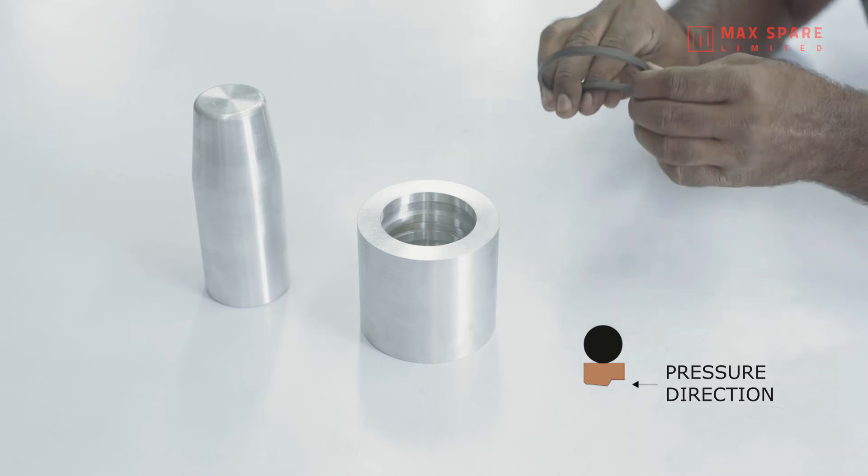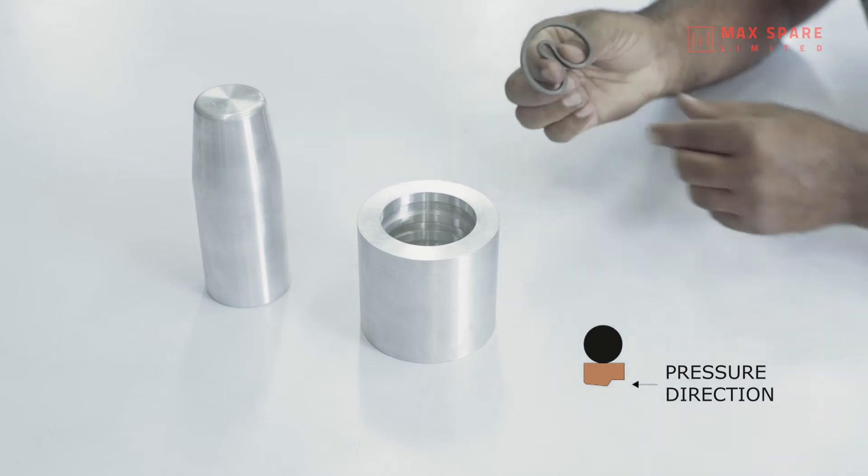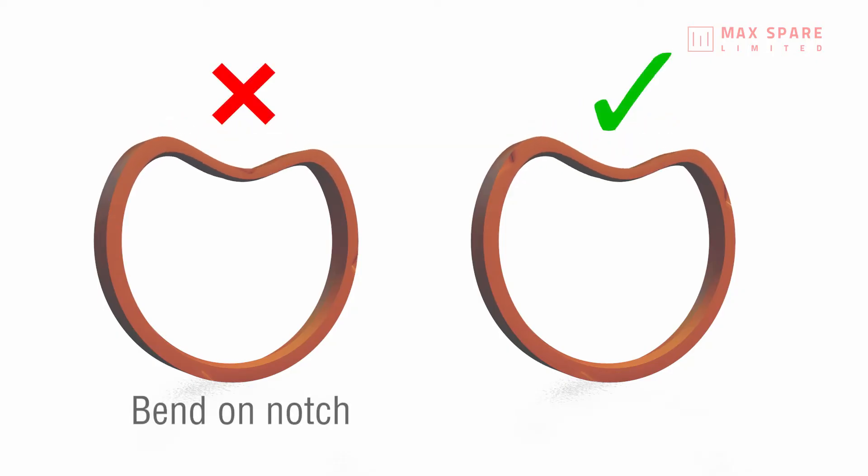Form the seal into a kidney shape by hand. Avoid any sharp bends. If the seal has a notch, it is important not to bend it on the position of the notch.